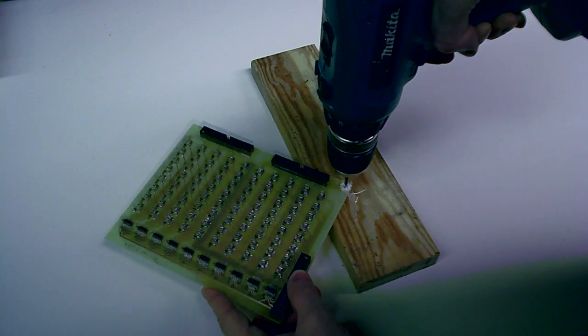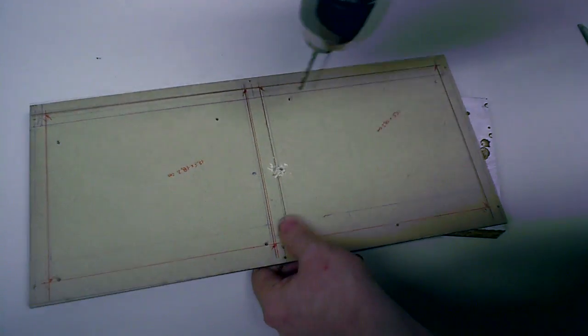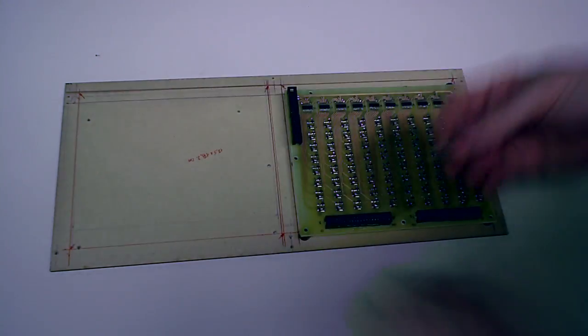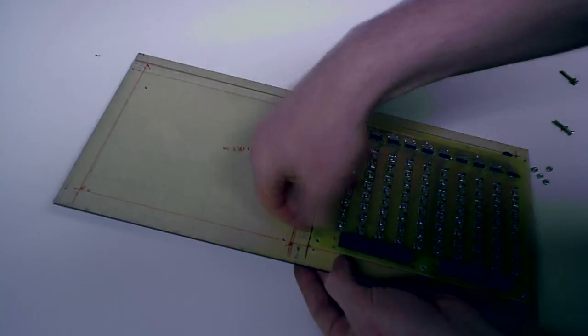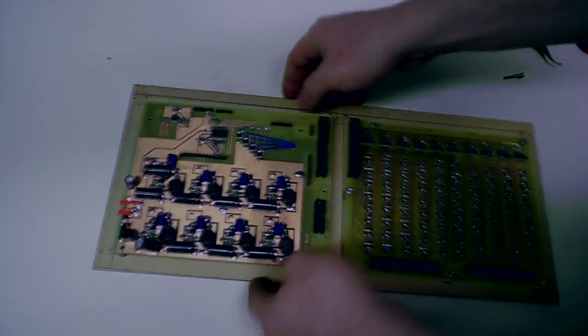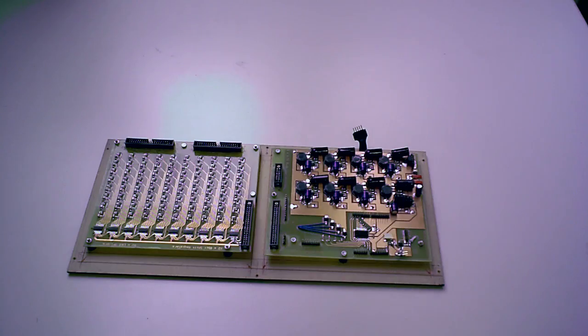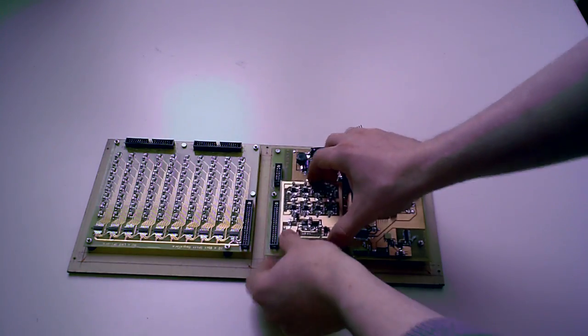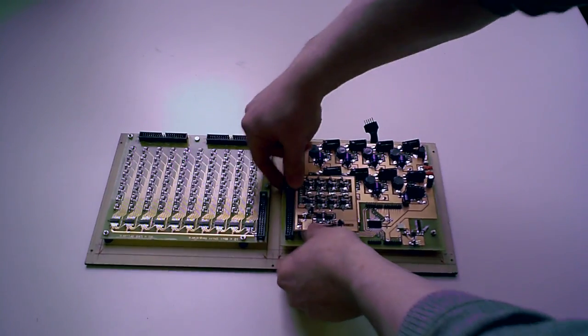Once the PCBs are made, I drill some holes in them, and assemble them to the back plate of the spectrum analyzer, using some spacers. I designed the PCBs in such a way, that they can be mounted to each other, saving a lot of space.